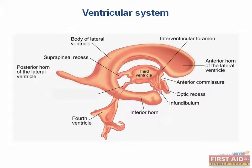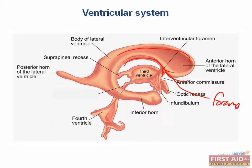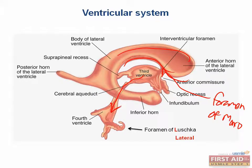The ventricular system is where the CSF is made and flows. CSF is made by the choroid plexus cells, which line the lateral ventricles, and is then resorbed through the arachnoid granulations into the venous sinus system. There is one lateral ventricle in each hemisphere that drains to the midline third ventricle and fourth ventricle. The lateral ventricle drains into the third ventricle via the foramen of Monro. The third ventricle drains into the fourth ventricle via the cerebral aqueduct. The fourth ventricle has three outflow tracts: the paired foramina of Luschka (lateral) and the foramen of Magendie (medial) — L for lateral, M for medial.